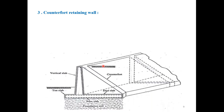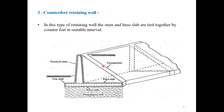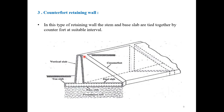The third type is the Counterfort Retaining Wall. You can see in the picture. In this type of retaining wall, the stem and base are tied together by counterforts at suitable intervals. It is economical for heights above 6 meters.